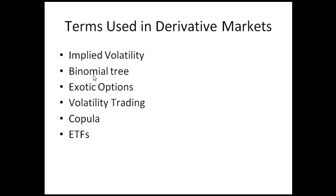Then we have exotic options, which are a little tricky. A compound option is a very simple exotic option — it's an option to buy an option, like a call on a call option. Again, I want to stress: don't worry about memorizing all these names. You can go to the Wikipedia page and read a little bit about them; that would be good enough.